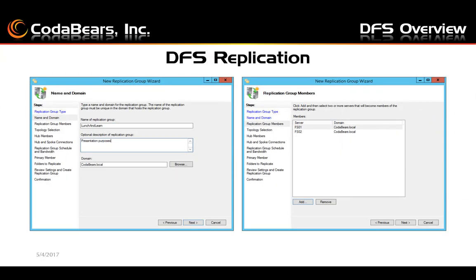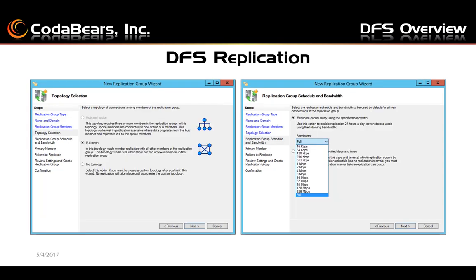To create replication, you hit New Replication Group and you get a wizard. You can create a name, give it a description, and it's going to be on the domain. Then you're going to add your replication members, which are the servers that are going to have the replicated files. There are some different topologies — generally you're going to use full mesh, where each member replicates with the other members in the group.